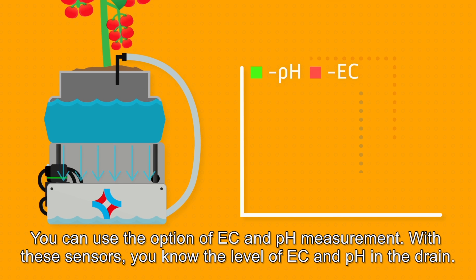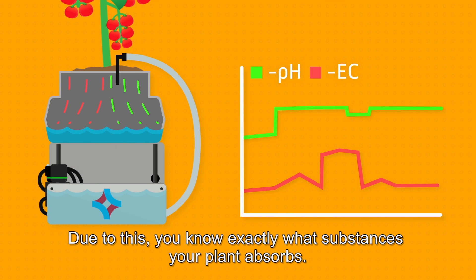You can use the option of EC and pH measurement. With these sensors, you know the level of EC and pH in the drain. Due to this, you know exactly what substances your plant absorbs.